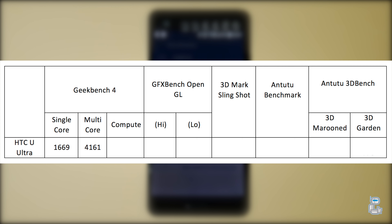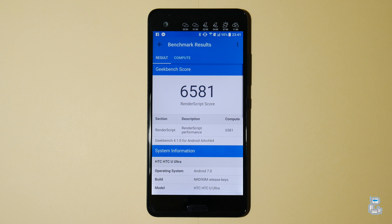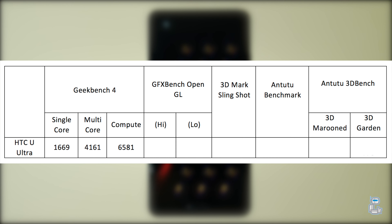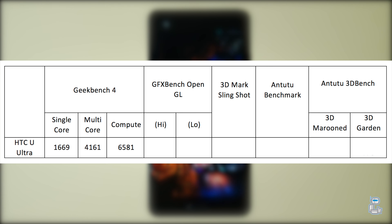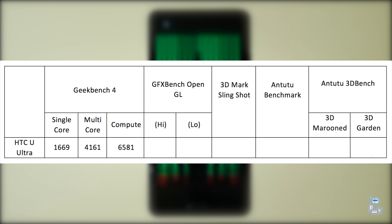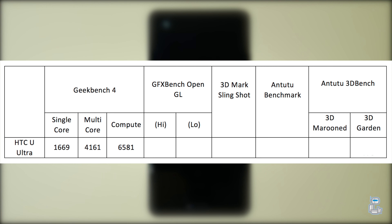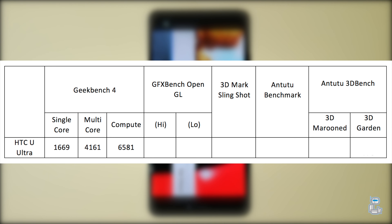For the single-core side of things I did get a result of 1,669, and on the multi-core side I did get 4,161. Once again using Geekbench 4, I did run an OpenGL performance test to test how well the HTC U Ultra can render out graphics, and with this I did get a score of 6,581.